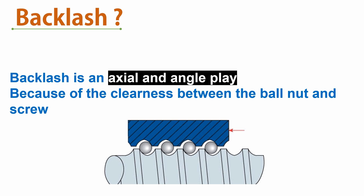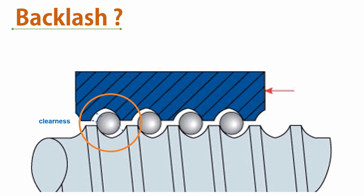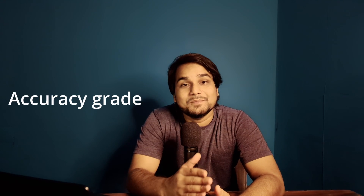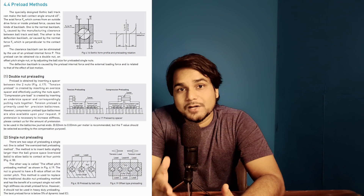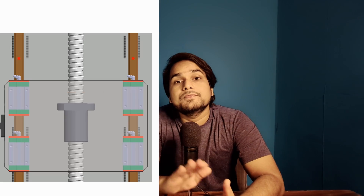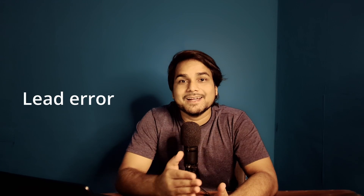Backlash is axial and angular play — the clearance between the nut thread and the screw. Don't confuse backlash with accuracy grade; they are different things. Backlash is a fixed clearance, a fixed amount of deviation in travel throughout the length. We can eliminate backlash by preloading the ball screw — applying a fixed load on the nut so it does not move in the axial direction. But accuracy grade is the ball screw lead error, which adds up at each revolution of the nut.